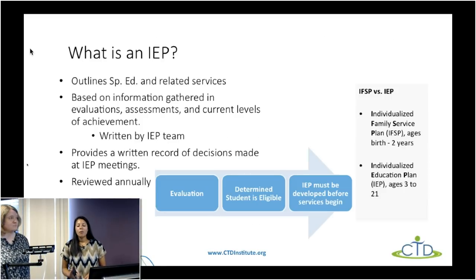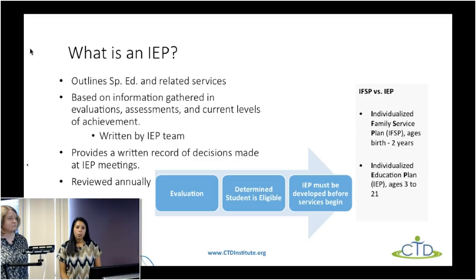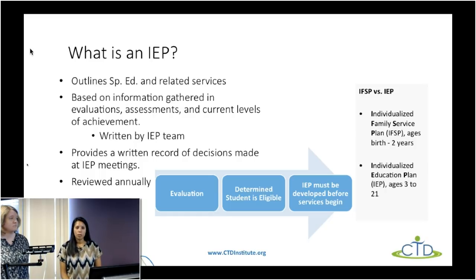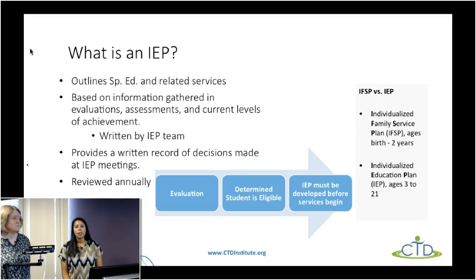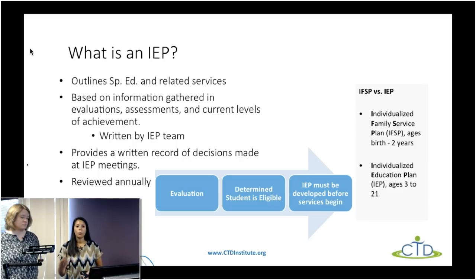The consideration part is not defined by law, so generally we're hoping that IEP teams have a conversation about assistive technology and what types of supports the student could really benefit from — typically a brief process during the annual IEP or IFSP meeting. The IFSP is the Individual Family Service Plan for kids birth to two years old, and the IEP — Individualized Education Plan — is for kids three to 21. The IEP outlines the type of special education services and related services the student needs, based on assessments or evaluations, with goals set for the year.